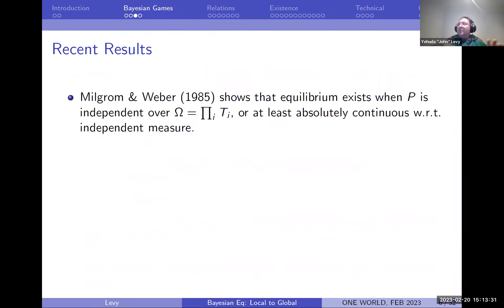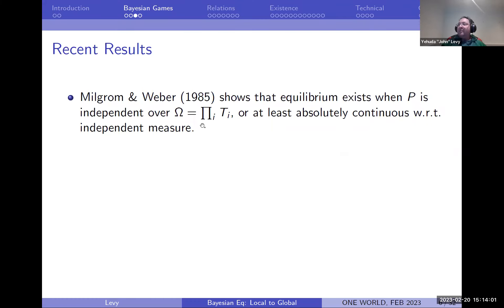Milgrom and Weber have the first seminal result, looking at the case where players have type spaces and the prior is a product measure — meaning their types are independent, or at least absolutely continuous with respect to a product measure. That's good, but it automatically eliminates a lot of very natural type spaces. For example, we don't even know: suppose Ziv, Galit, and I are playing, and Ziv and I commonly know something but Galit isn't told anything. That does not satisfy this assumption, yet seems to be a very simple structure.